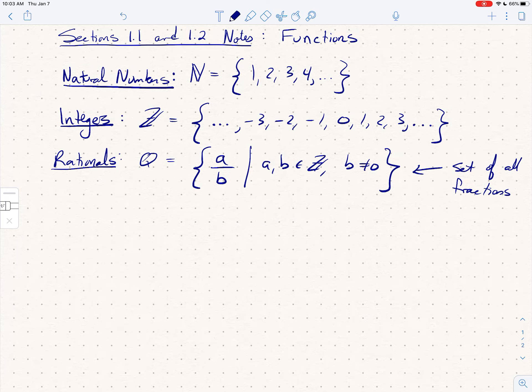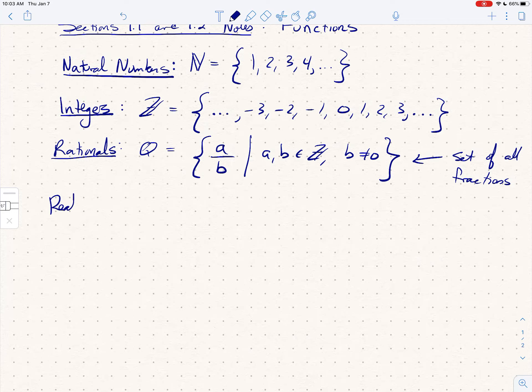And so that brings us to the real numbers. So the real numbers, which we're going to denote by R—we usually put double bars on these things—the real numbers are the rationals plus the irrationals. The rationals are all the numbers that you can write as a fraction.